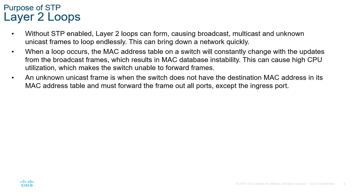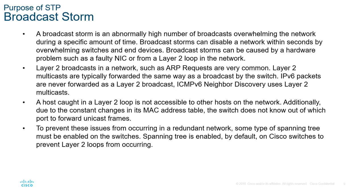Without STP enabled, layer 2 loops could form. When the loops do form, it would cause instability in the network. An unknown unicast frame could accidentally cause a broadcast storm — an abnormal high number of broadcasts that overwhelm a network to the point that all resources are consumed. A host caught in a layer 2 loop will eventually become inaccessible, because the devices have limited resources, and when all resources are being used to process these broadcasts, it essentially becomes a denial-of-service attack.